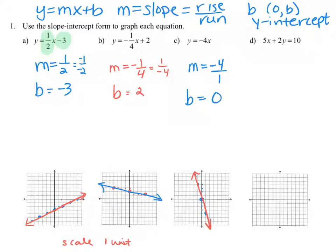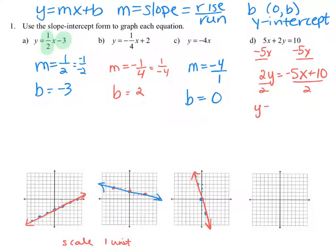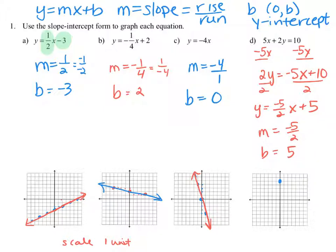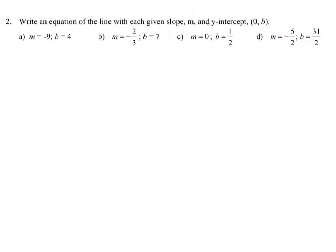In part d, the equation is not written in y equals mx plus b form, so we need to convert. Begin by subtracting 5x from both sides to get 2y equals negative 5x plus 10, then divide both sides by 2 to get y equals negative five-halves x plus 5. The slope is negative five-halves and the y-intercept is 5. Begin graphing at positive 5, then move 5 units down and 2 units to the right to sketch the line.